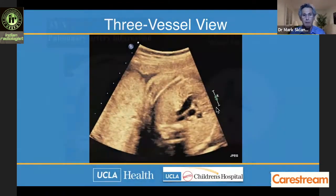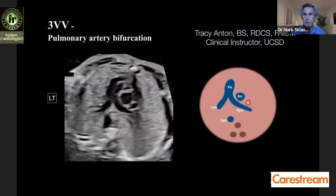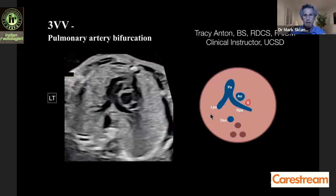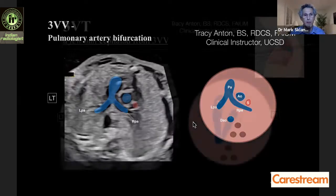These are some nice images borrowed from Tracy Anton, a clinical instructor at UC San Diego, showing basics of the three vessel view: the pulmonary artery bifurcation, the LPA and RPA, the aorta, and the superior vena cava. This view is sometimes one of the best for looking at the branch pulmonary arteries themselves.